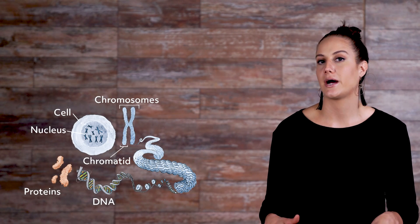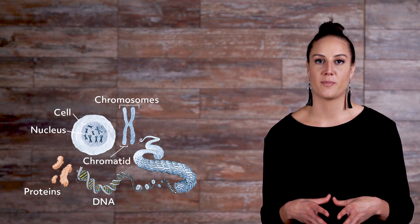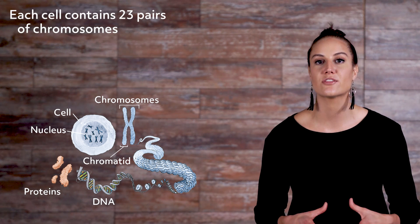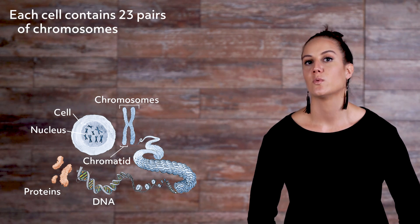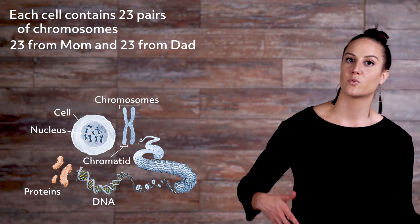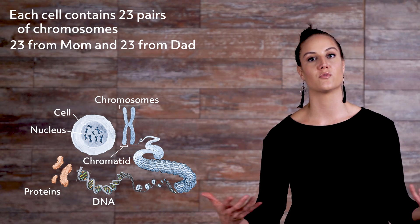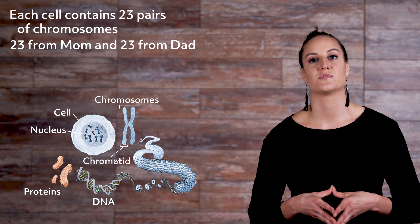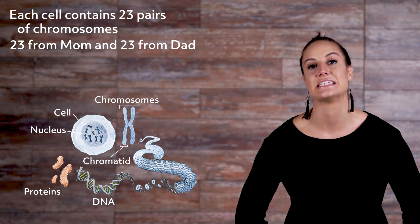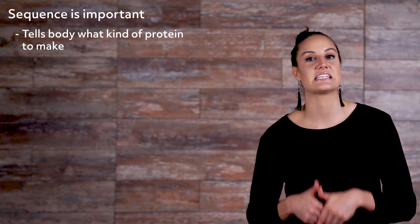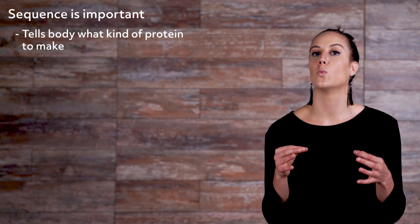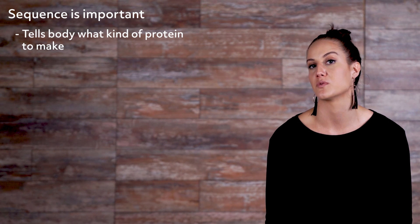Here's what it looks like inside the body. Each cell in our body typically contains 23 pairs of chromosomes. We get 23 from mom and 23 from dad, for a total of 46. Within these chromosomes are long strands of DNA. Remember, DNA is made up of four different nucleotides, all paired together. The way in which they are sequenced is very important.